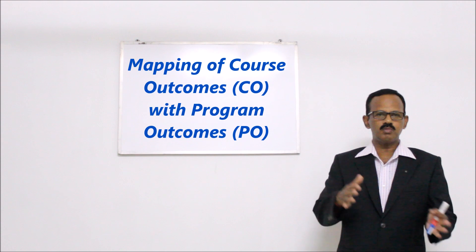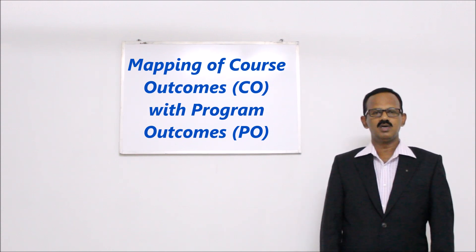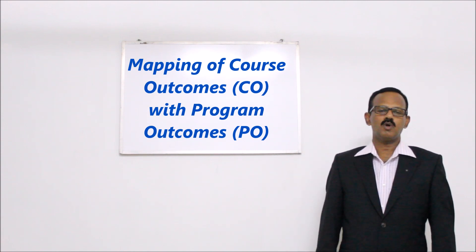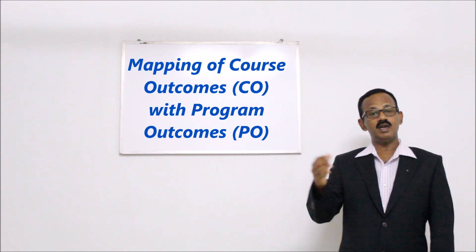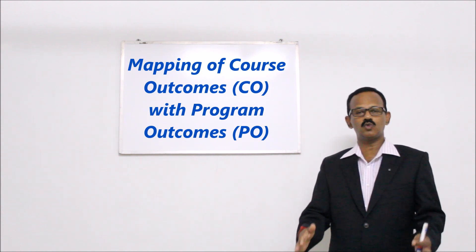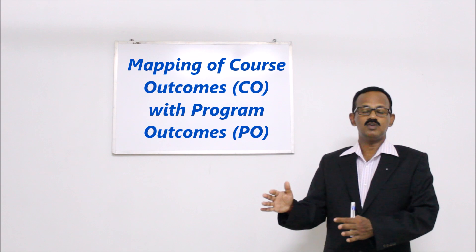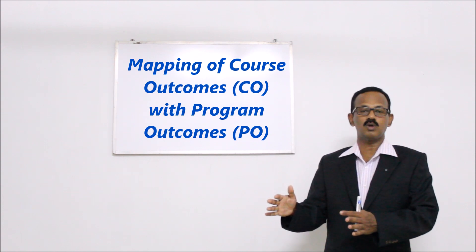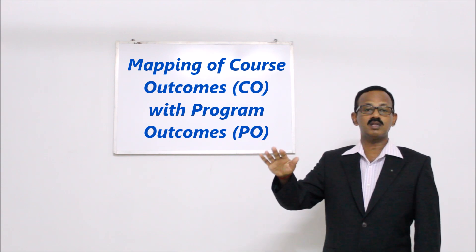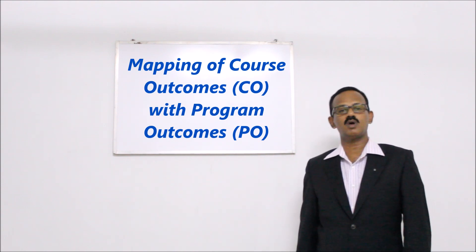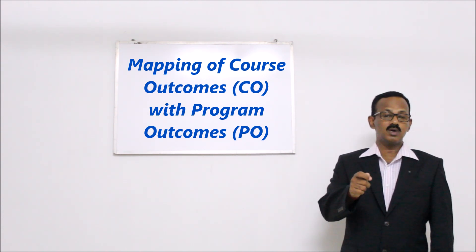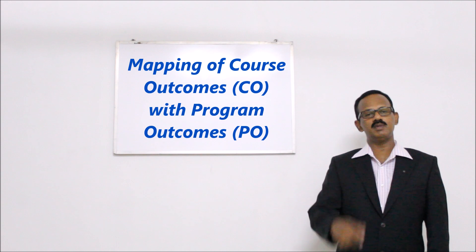Through these courses only, program outcomes are being achieved. One course will be related to certain program outcomes and may not be related to others, but collectively through the offering of all courses, we must guarantee that all twelve program outcomes and the program specific outcomes are being attained. So we are going to attain the program outcomes through the courses which are being offered.